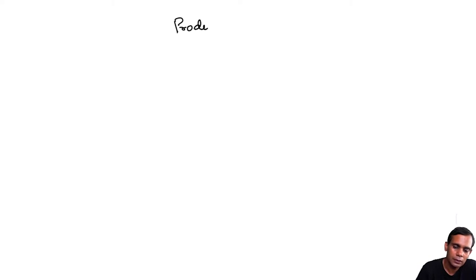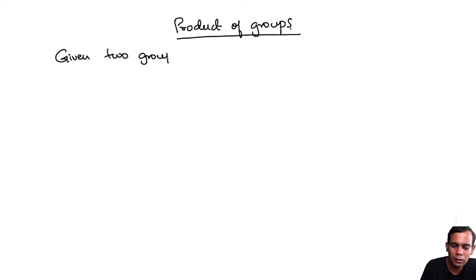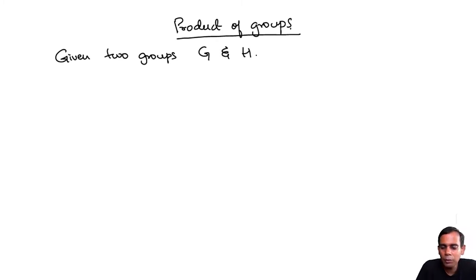Let's talk about a way of creating new groups from old ones. This is called the product of groups. Given two groups G and H, you can put a group structure on the Cartesian product of the set G cross H.